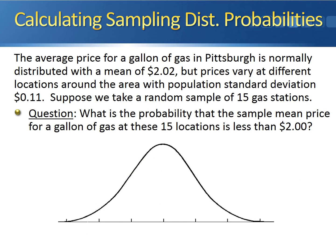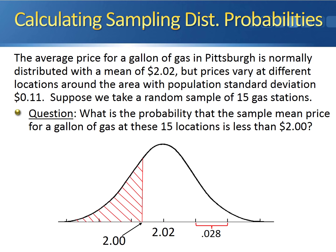Now that we know x-bar follows a normal distribution, we can get a visual representation of the problem. This curve is the sampling distribution of x-bar, centered at its mean of $2.02, with a standard error of 0.028. The value of interest is $2, and we want the probability that the sample mean of our 15 locations is less than $2 — that is, the shaded area below $2 on this normal distribution.